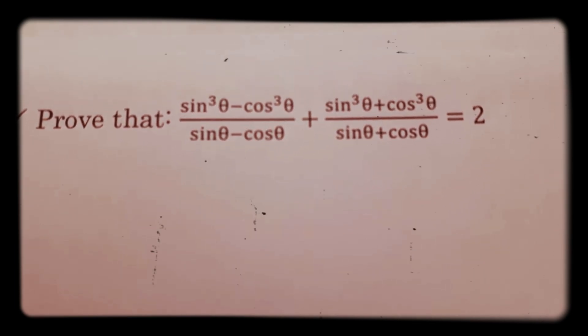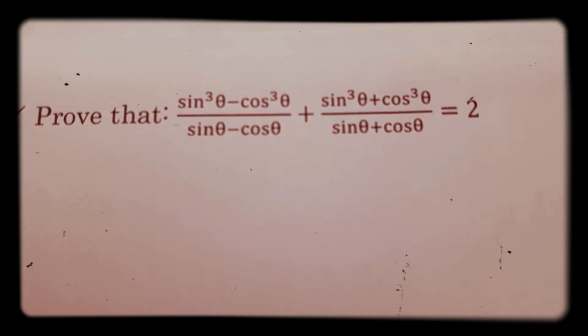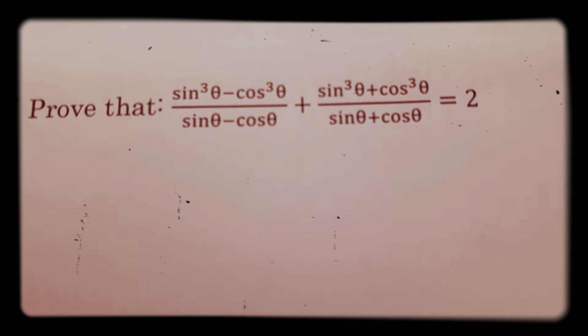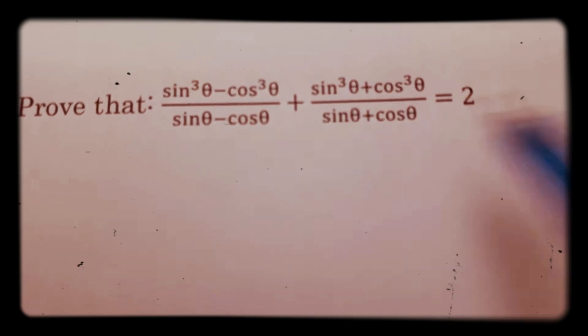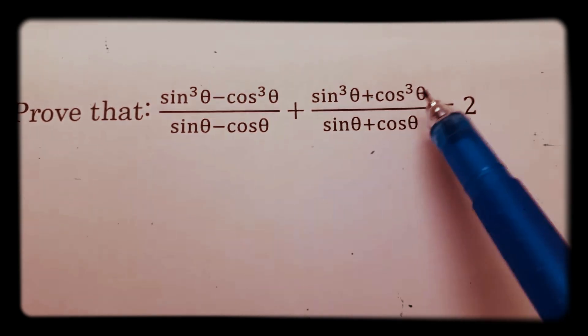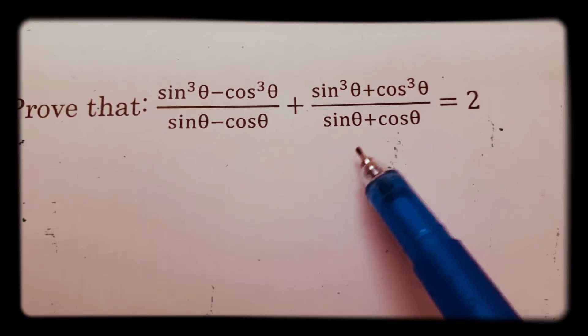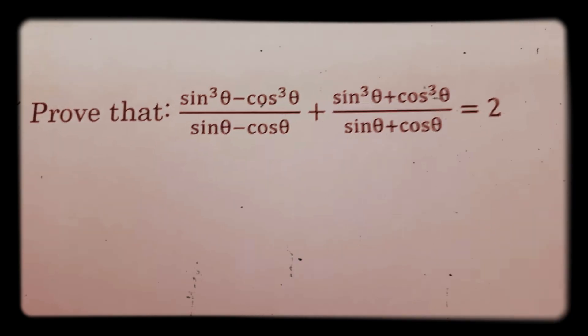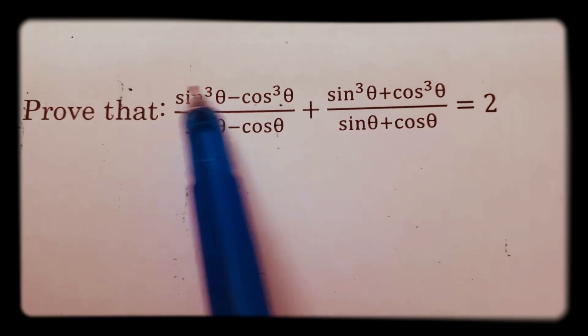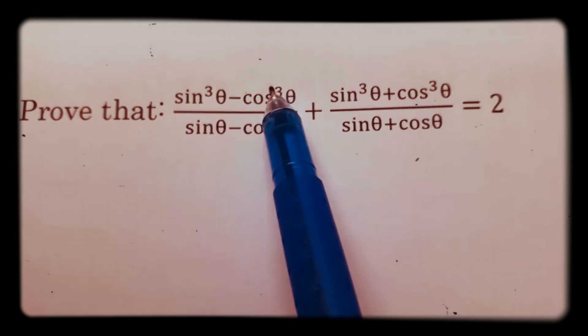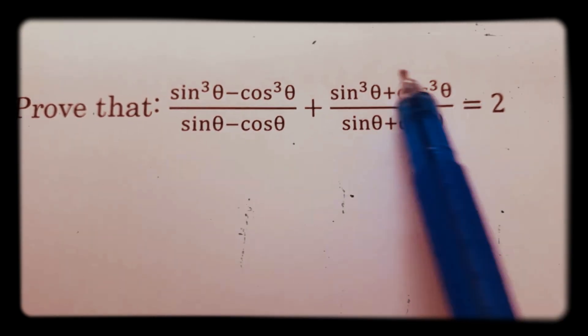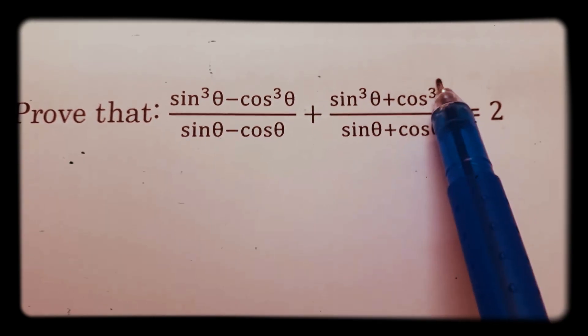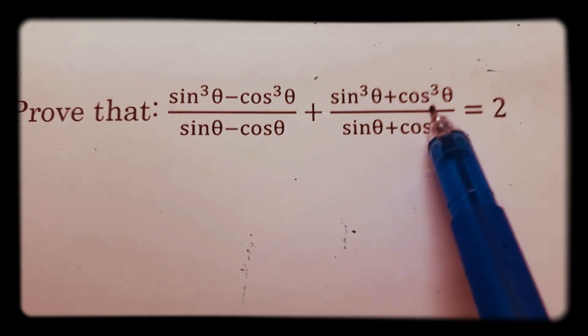Prove that sin cube theta minus cos cube theta by sin theta minus cos theta, plus sin cube theta plus cos cube theta by sin theta plus cos theta, equals 2. The first term is in the form of a cube minus b cube, and the second term is in the form of a cube plus b cube.